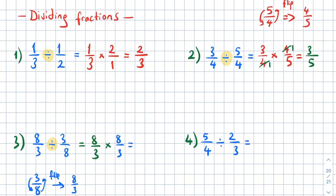The result is 64 over nine. Question four: the first fraction is five over four. Keep five over four the same, change the operation to multiplication, then flip the second fraction three over two. The answer is five times three over four times two, which is fifteen over eight.